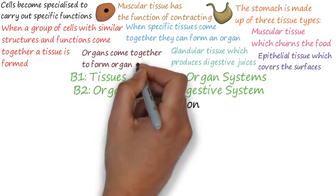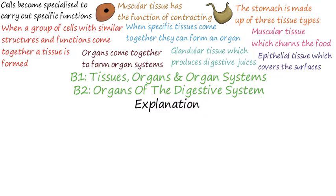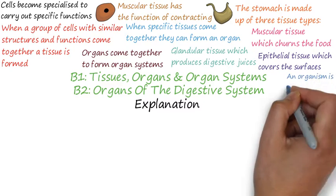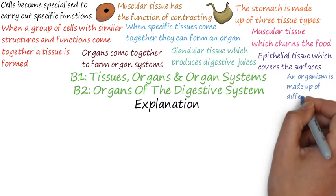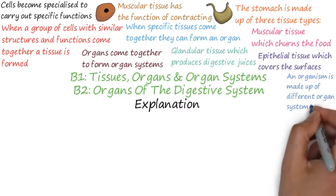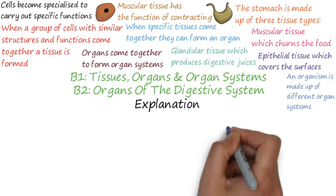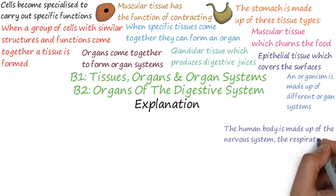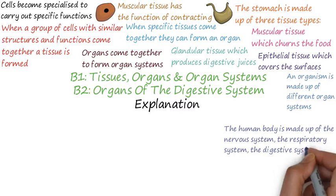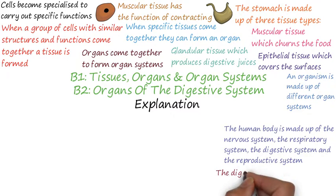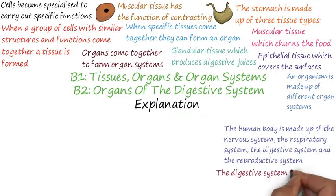Organs can then come together to form organ systems. The organs in an organ system work together to carry out specific functions. An organism is made up of different organ systems. The human body has four organ systems which are the nervous system, the respiratory system, the digestive system, and the reproductive system.